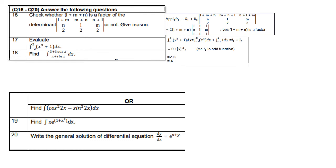For question 17: integrate from −2 to 2 of (x³ + 1) dx. Split into ∫₋₂² x³ dx + ∫₋₂² 1 dx. The first integral is zero since x³ is an odd function. The second integral equals [x] from −2 to 2 = 2 − (−2) = 4. The answer is 4.